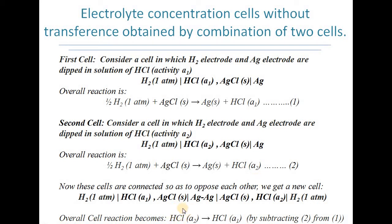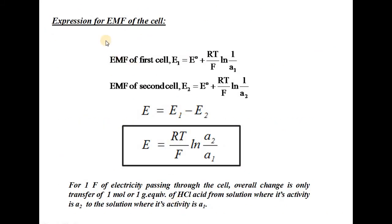We use both 'one mole' and 'one gram equivalent' since for HCl they are the same. Applying the Nernst equation, E1 = E° + RT/F · ln(1/A1) and E2 = E° + RT/F · ln(1/A2). The net EMF is E1 − E2, giving E = RT/F · ln(A2/A1). For one faraday of electricity, the overall change is transfer of one mole or one gram equivalent of HCl from solution of activity A2 to activity A1.